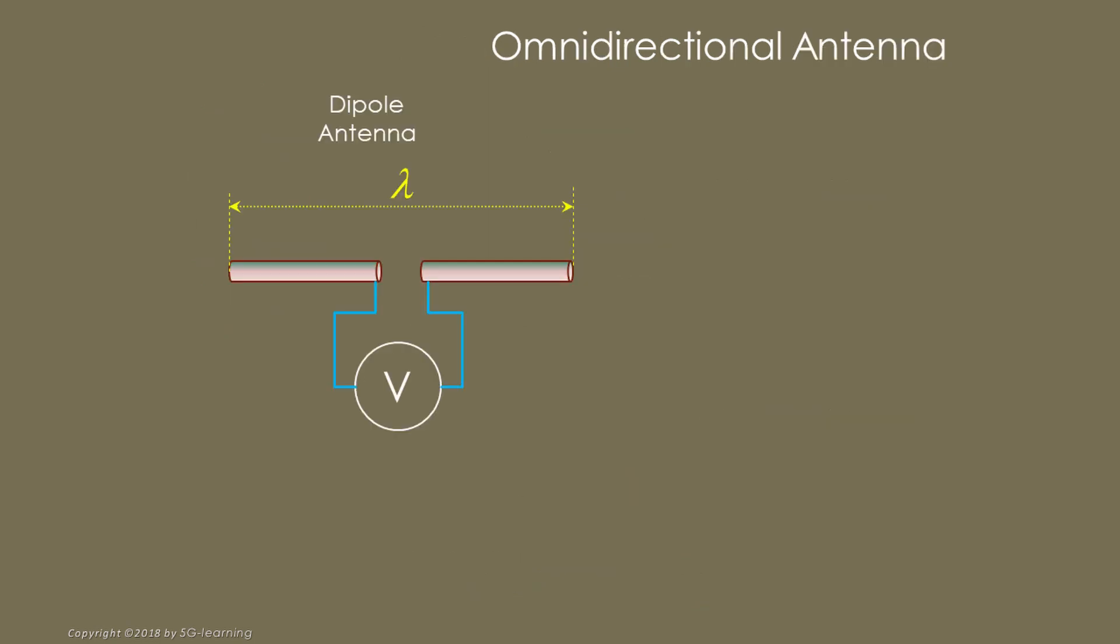A very simple antenna is composed by two small conducting bars, connected to an electric sensor, a voltmeter for example. If the antenna dimensions are much smaller than the wavelength of the incoming electromagnetic waves, it receives practically the same power from any direction. In this case, we call it an omnidirectional antenna, and we represent it with a small circle.